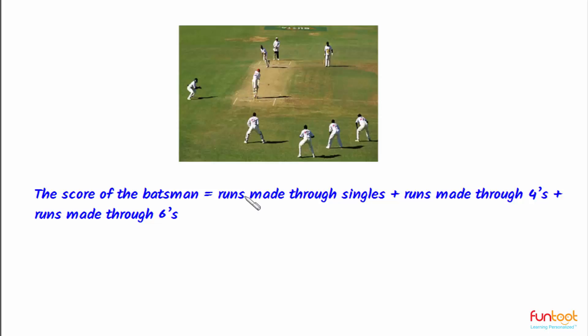Let's now look at the second part of the question where we need to find the exact number of singles, fours and sixes. The number of sixes hit by the batsman can be one, two, three or any number, but it cannot be zero as stated in the question. Let's explore these possibilities using the graph of the equation which we have to make in the first part of the question. With this approach, let's complete the solution.